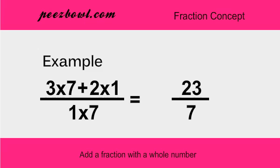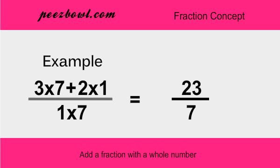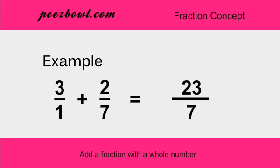Denominator will be 1 multiplied by 7, that is 7. Hence, the result of adding 3 and 2 upon 7 is 23 upon 7.